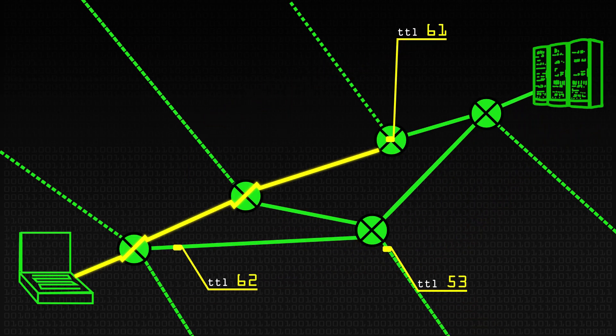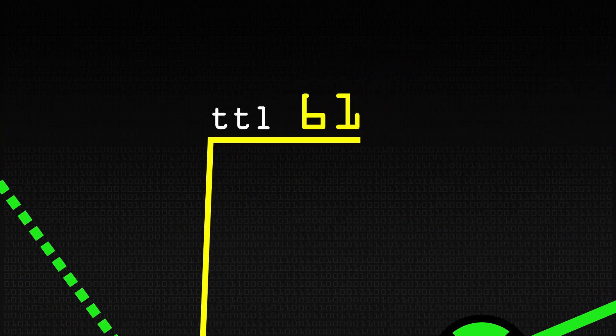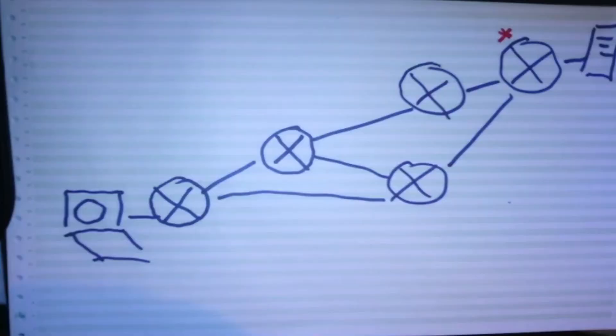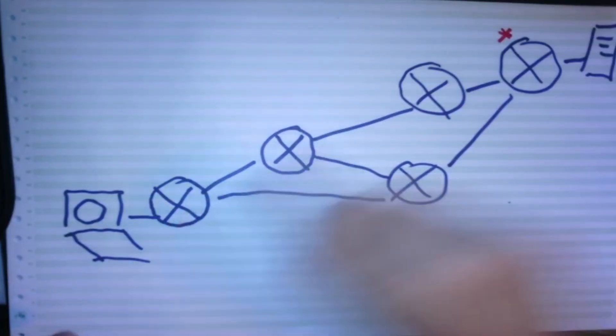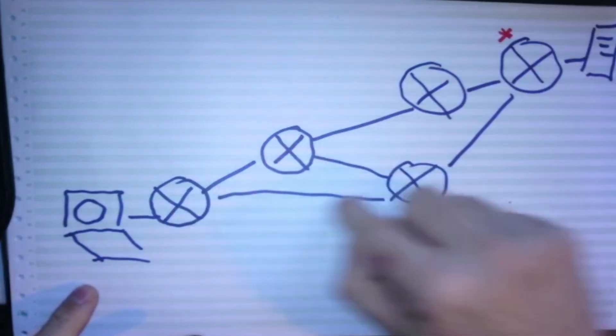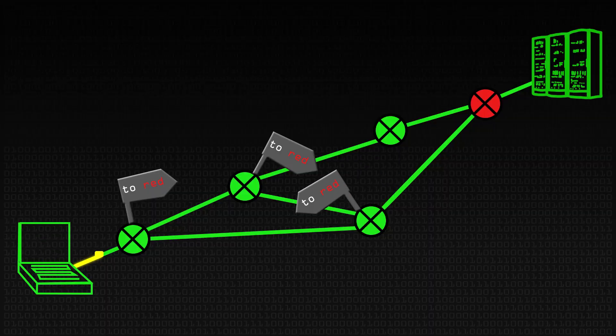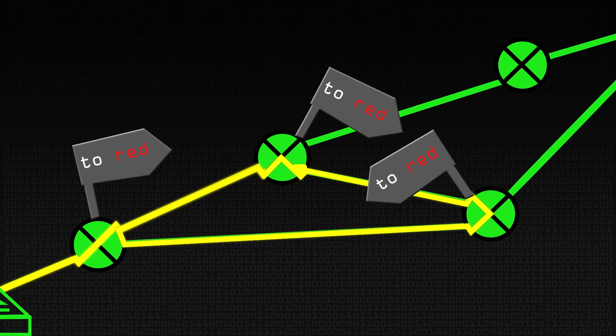Every internet protocol packet, when it's created, is set up with this flag - time to live. It's as if they've all got a doomsday clock on them, a little counter. Every time the packet goes through a router, that time to live counter decrements by one. There's a very good reason for that: if your network is misconfigured, you can get what we call a routing loop. Traffic meant to go to a particular router ends up going around in a circle, filling up your network. So they made this design choice to have the time to live counter.